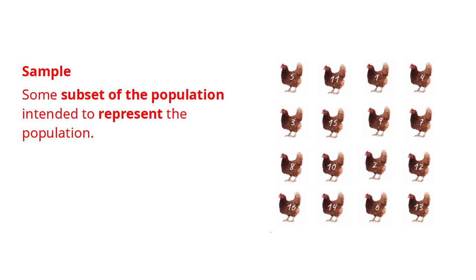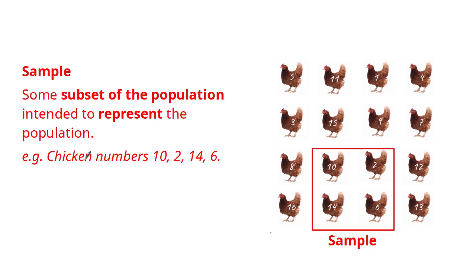The first method is a sample. A sample is seen as some subset of the population intended to represent the population. An example of this sample would be chickens with the numbers 10, 2, 14, and 6 as illustrated on the diagram. This is a smaller subset of this larger population which we could investigate to give us information about this larger population.